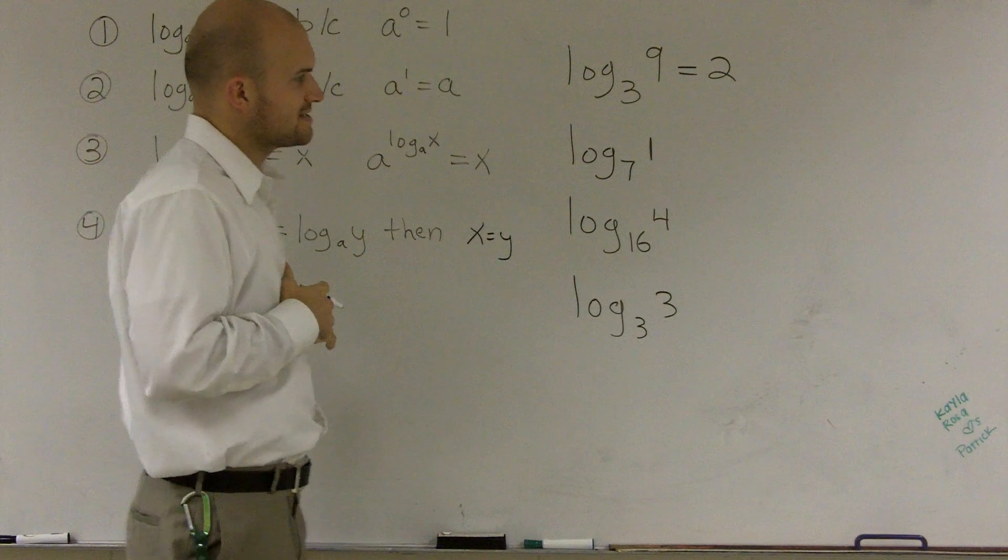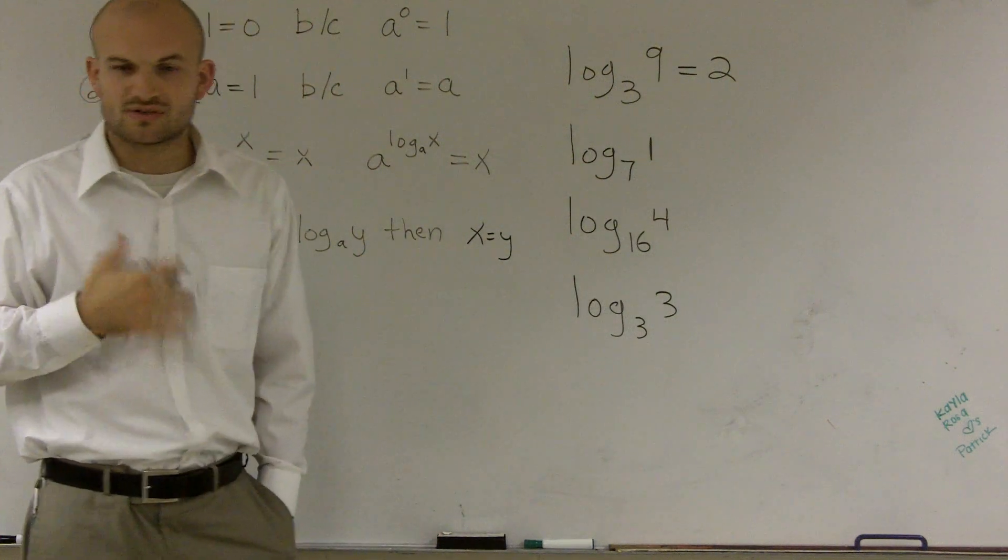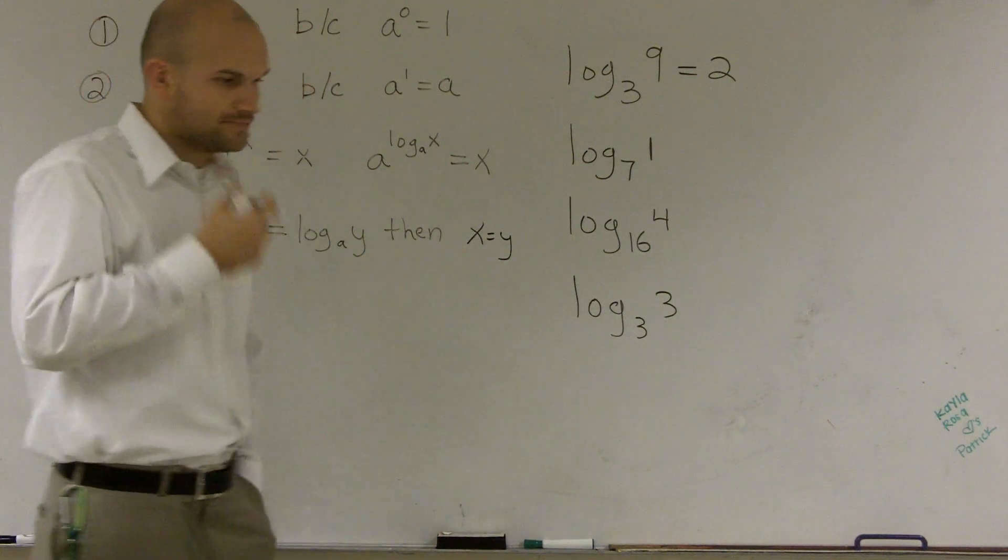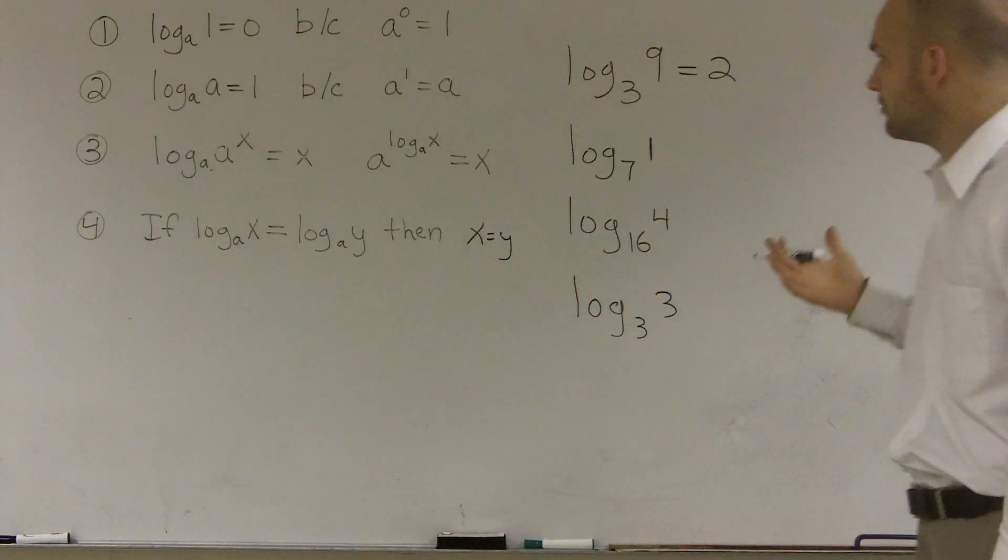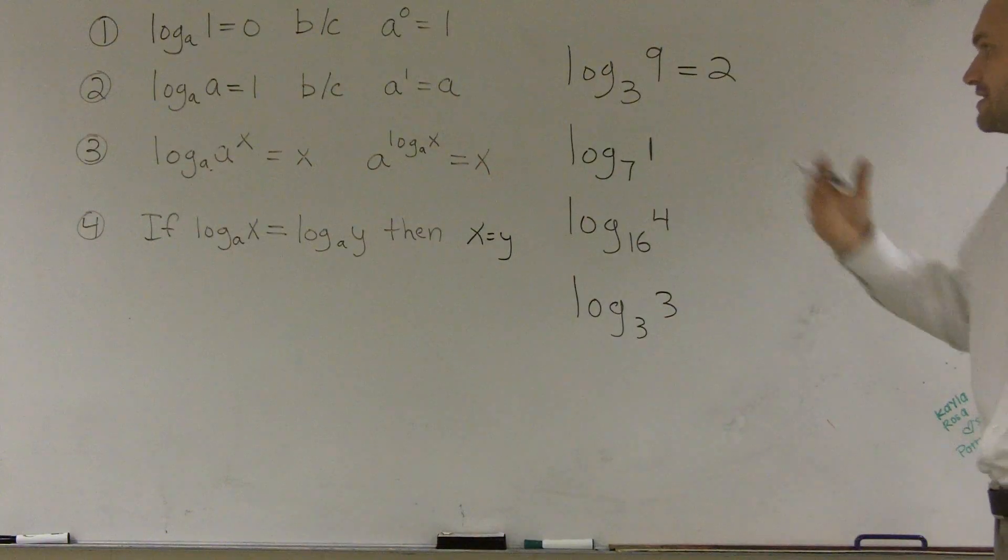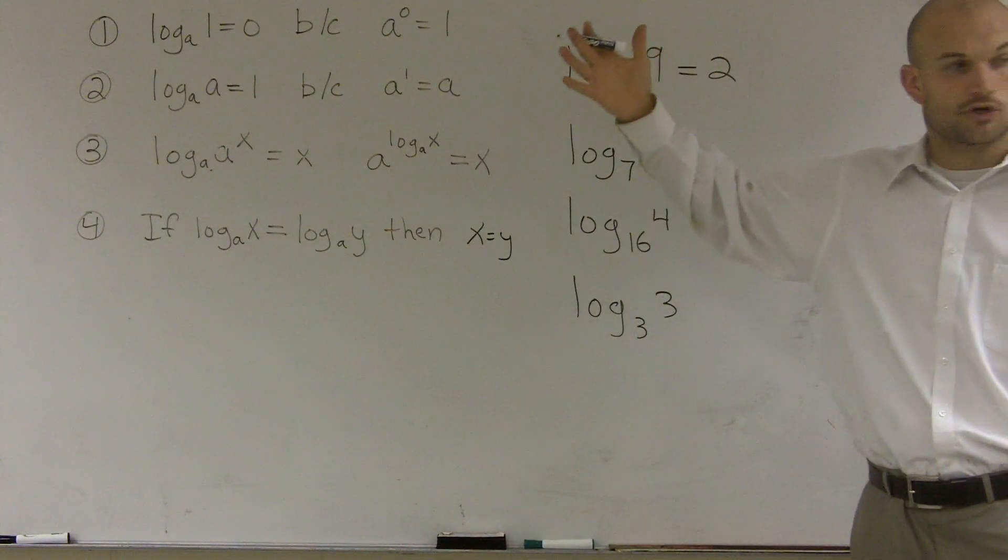Now here, I have log base 7 of 1. So 7 raised to what number gives me 1? If you're very familiar with your exponents, you could say that's going to be 0, because 7 raised to the 0 power gives me 1.